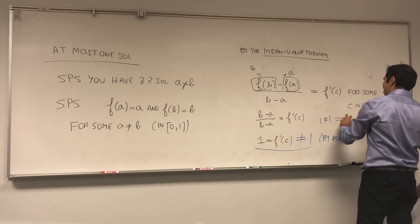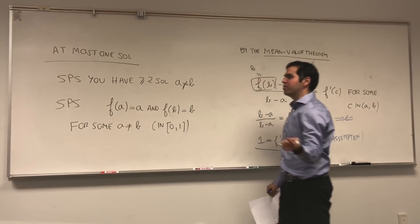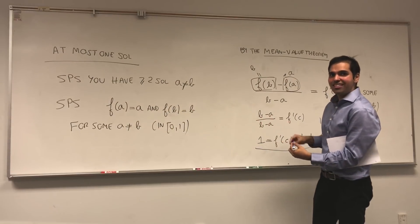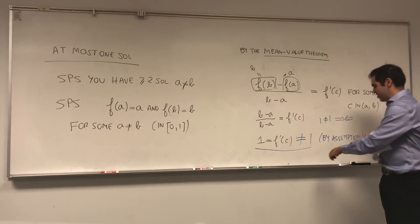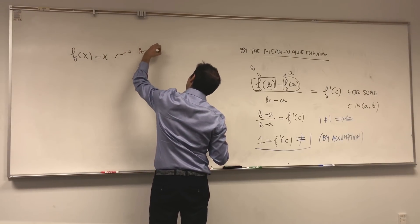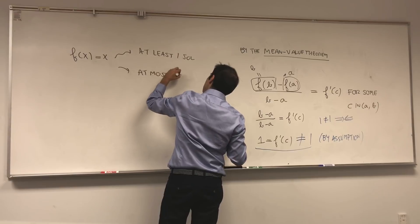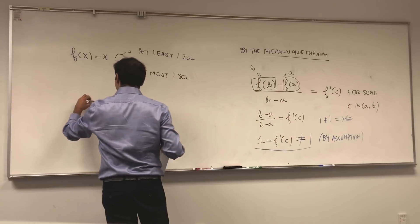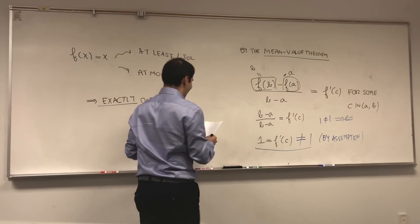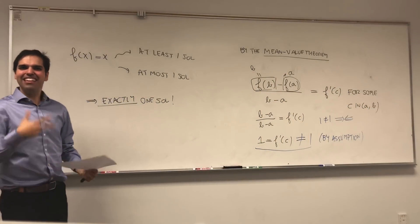And notice, so far we have not used our assumption about the derivative, but now remember that we assume that f' is never equal to 1 by assumption. And therefore we get 1 is not equal to 1, and at least on earth that's a contradiction. Contradiction with the fact that we have at least two solutions. And therefore this equation cannot have at least two solutions, and therefore it has to have at most one solution. We have f(x) equals x has at least one solution and at most one solution. And if we put them together, we get that it has exactly one solution. Ta-da! How neat is that?